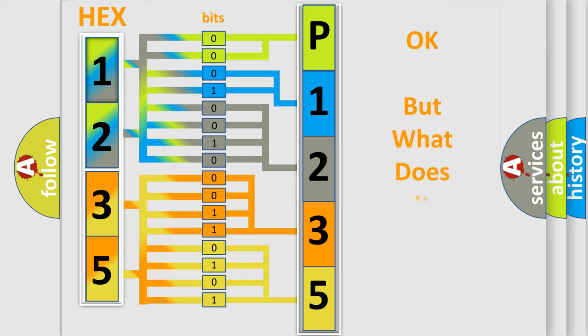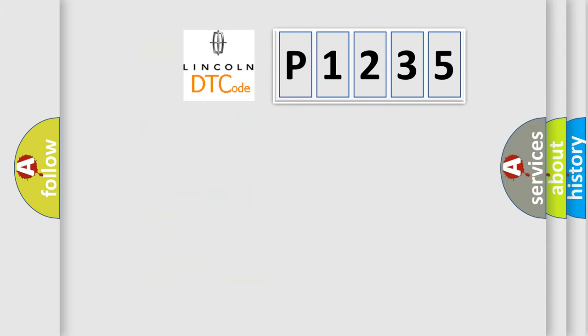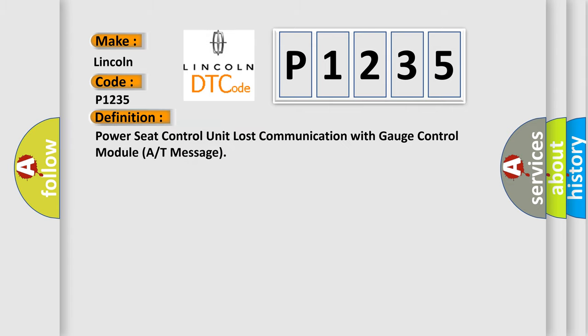We now know in what way the diagnostic tool translates the received information into a more comprehensible format. The number itself does not make sense to us if we cannot assign information about what it actually expresses. So, what does the diagnostic trouble code P1235 interpret specifically? Lincoln car manufacturers. The basic definition is: Power seat control unit lost communication with gauge control module A or T message.